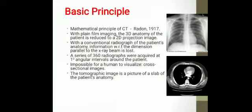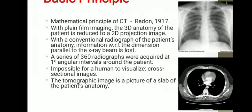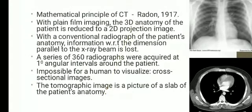Now, what is the basic principle of CT? The basic principle of CT is it uses a mathematical principle which was developed by Radon in 1917. With plain film imaging, the 3D anatomy of the patient is reduced to a 2D projection image. Information with respect to the dimension parallel to the X-ray beam is lost. A series of 360 radiographs required at one-degree angular intervals around the patient. It is impossible for a human eye to visualize cross-sectional images. The tomographic image is a picture of a slab of the patient's anatomy.